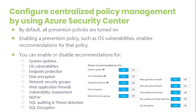The first one: system updates — retrieve a daily list of available security updates and critical updates from Windows Update or Windows Server Update Services. Second, OS vulnerability: analyze OS configuration daily to determine issues that might make the virtual machine vulnerable to attack. Endpoint Protection: recommend endpoint protection to provide provisions for all Windows VMs to help identify and remove viruses, spyware, and other malicious software.